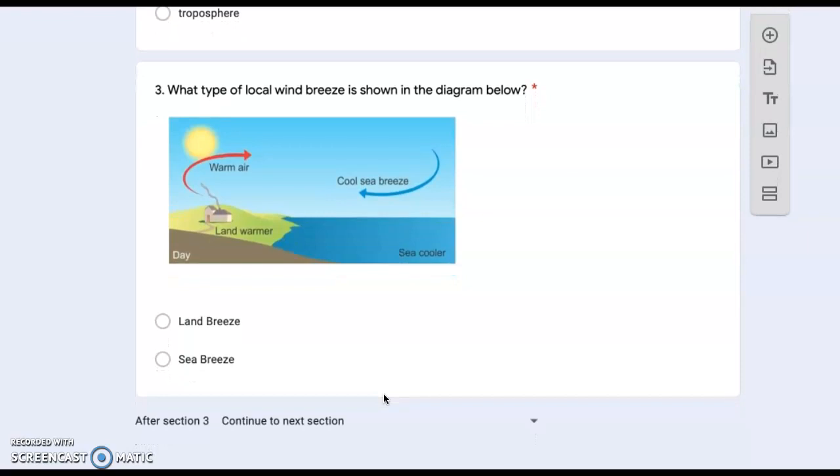Number three: what type of local wind breeze is shown in the diagram below? The sun is out. Land breeze or a sea breeze?